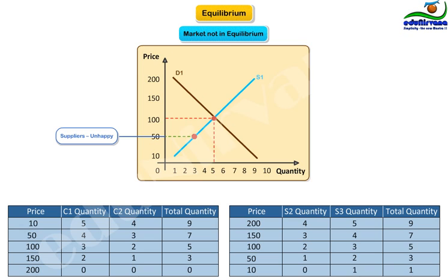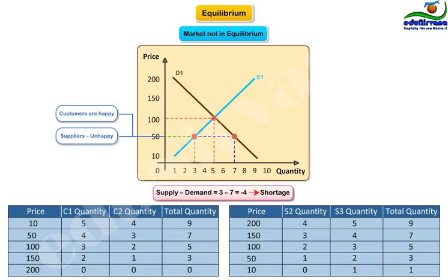So, total quantity supplied at price point of $50 will be 1 plus 2 which equals 3 units. The customers, that is, supply of 3 units minus demand of 7 units results in minus 4 units which is the shortage.